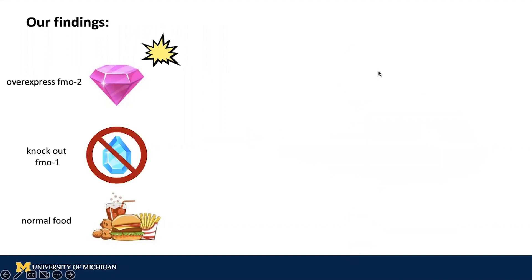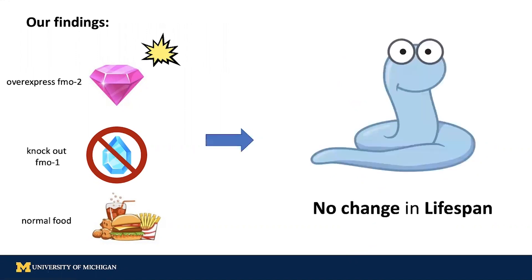Now, we kept these conditions the same, but got rid of the blue gem. We wanted to see what the relationship between the two gems are. We observed that without the blue gem, the super pink gem didn't work anymore. We got this cute worm with a normal lifespan again.